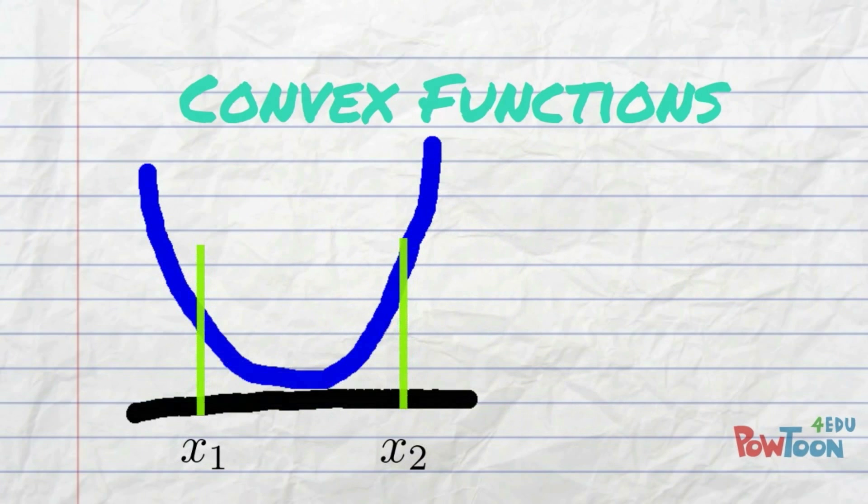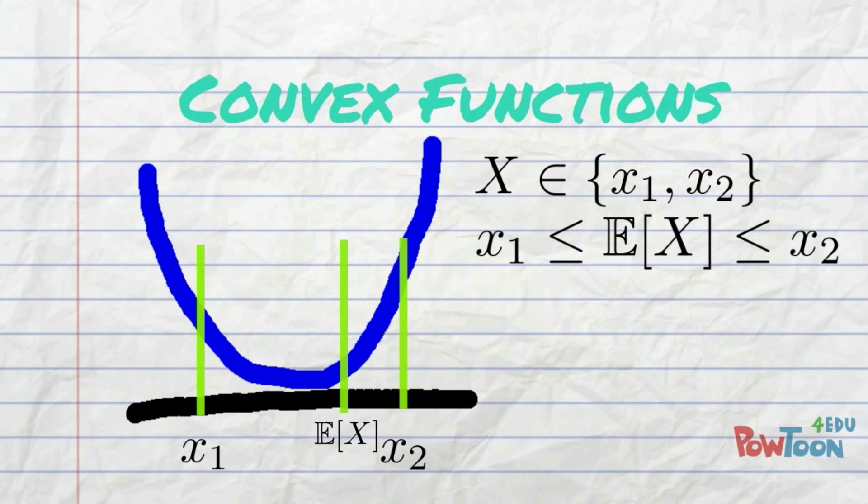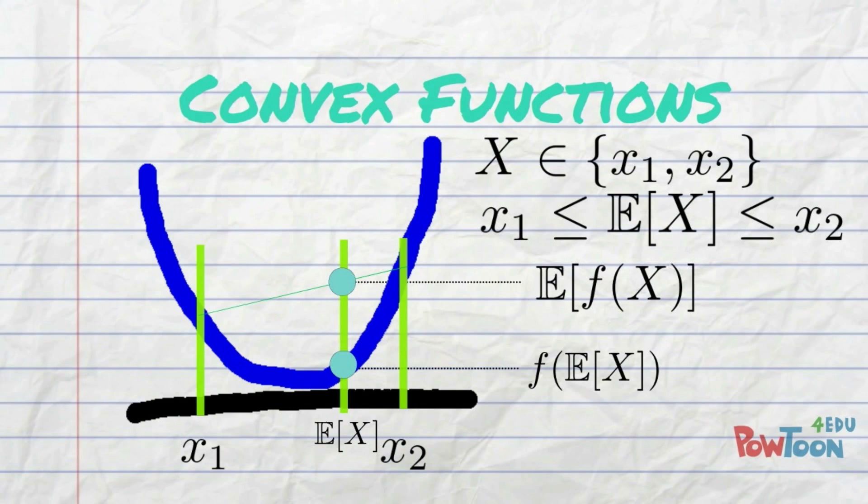Suppose that x1 and x2 are two x values, and that the random variable x is either x1 or x2. Then the mean of x lies between x1 and x2. If I put a dot on the function line that has height f of the mean of x, here's the interesting part: if I put a dot on the secant line, that has height mean of f of x.